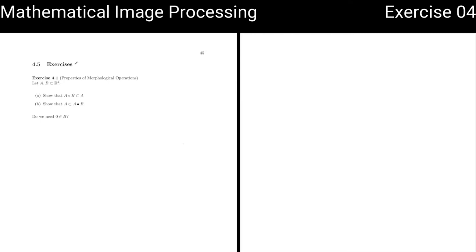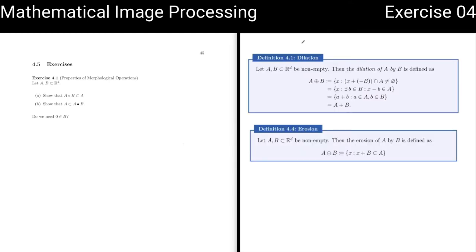We have a very basic exercise on properties of morphological operations. As a recap, the basic operations that we know are dilation, denoted by a plus sign in a circle. The best way to think about it is to read this definition from below to the top. We have here a so-called Minkowski sum, which consists of the sums of all elements that are in set A and set B.